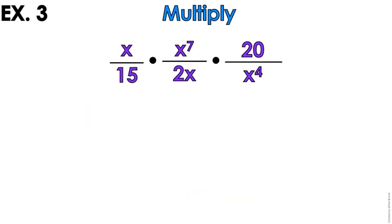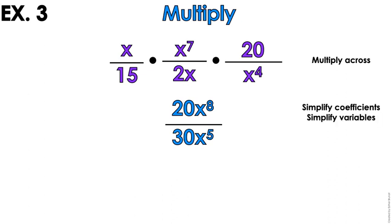Let's move on to example number 3. This is monomials. With monomials, let's just multiply across. 20, x to the 8th, because x times x to the 7th is x to the 8th. And then 15 times 2 is 30. x times x to the 4th is x to the 5th.